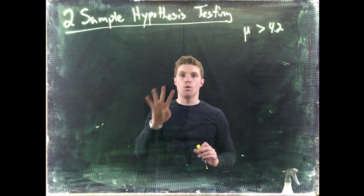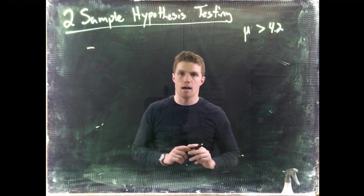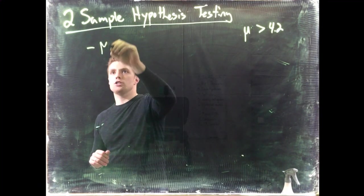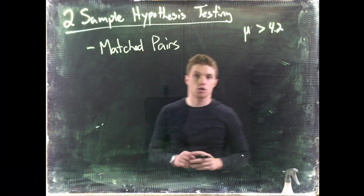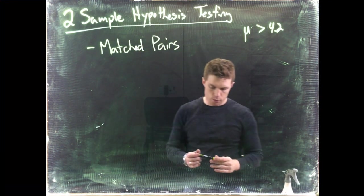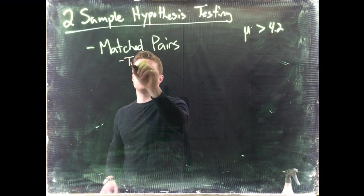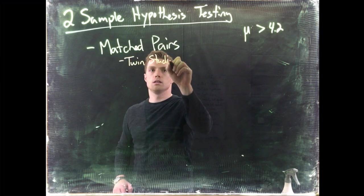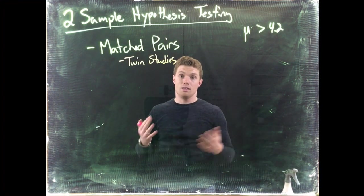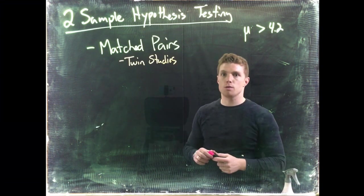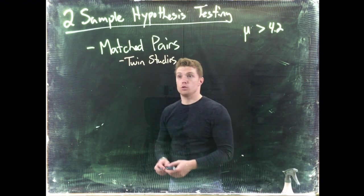There are four specific tests we can do. The first is a dependent two-sample test called matched pairs. Matched pairs are used all the time, especially in pharmaceutical studies. In twin studies, for example, the same DNA receives both different types of treatments and we can compare those treatments to one another. Matched pairs is really useful, but a lot of times you don't have matched pairs available.